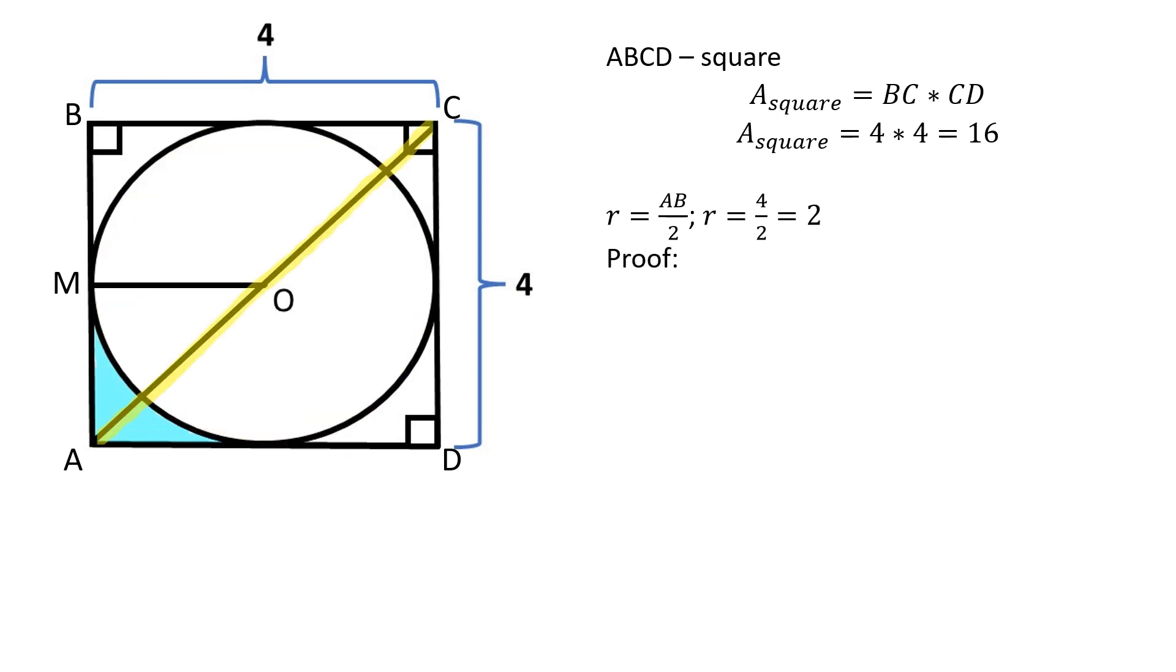Let's connect point A to point C and point B to point D. AC and BD are the diagonals of square ABCD. The diagonals will intersect in the center of the inscribed circle.